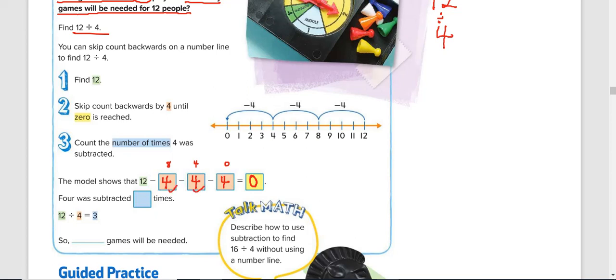So how many times did we subtract 4? 3 times: 1, 2, 3. So therefore, 12 divided by 4 is 3. So 3 games will be needed.